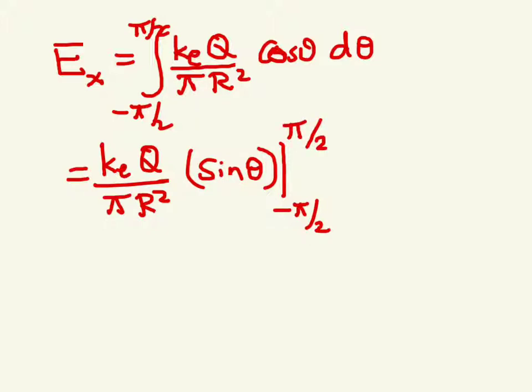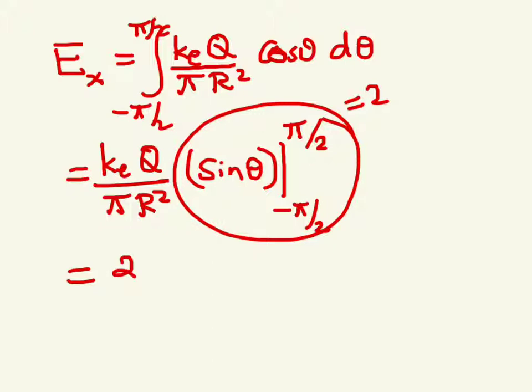So it's sine pi over two minus of minus, well, sine pi over two minus sine of minus pi over two, which is minus sine pi over two. So this whole thing ends up being, you know, when you calculate it, this is equal to one minus of minus one, so that is two. Right? So that gives you two. So the X component of the electric field can be written as 2KEQ divided by pi R squared. Okay?